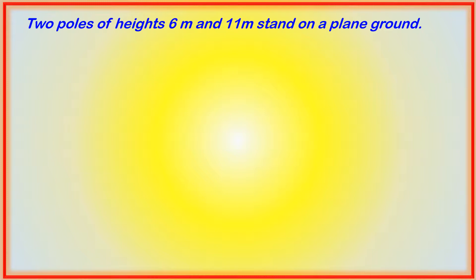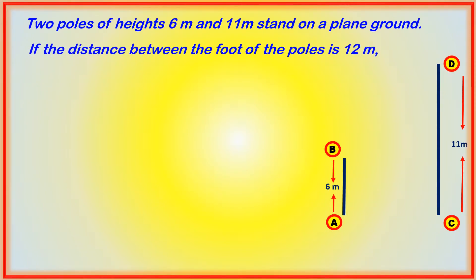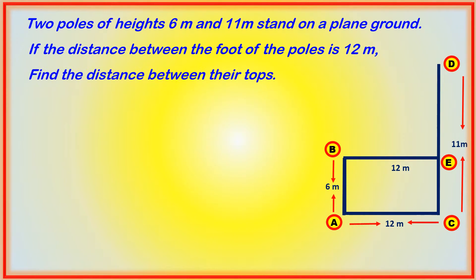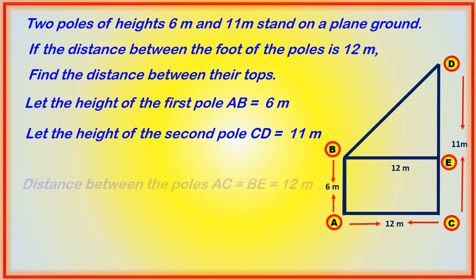Two poles of height 6 meters and 11 meters stand on plain ground. Let AB be the first pole of height 6 meters and CD be the second pole of height 11 meters. The distance between the foot of the poles AC is equal to 12 meters. BE is also equal to 12 meters because opposite sides of a rectangle are equal. We have to find the distance between their tops, that is BD.